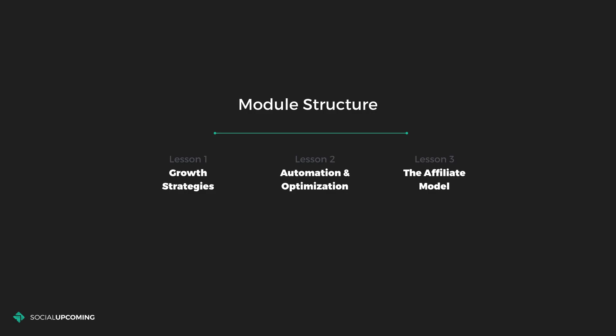This is the structure for Module 5: Automation and Growth. What I want you to do now is scroll below this video on this page and find a button that says 'First Lesson.' Click that button and you'll go to lesson number one to learn about growth strategies — so go ahead and do that now.